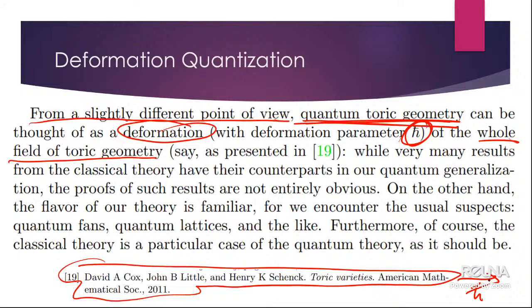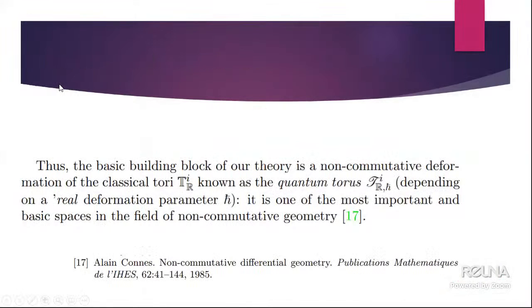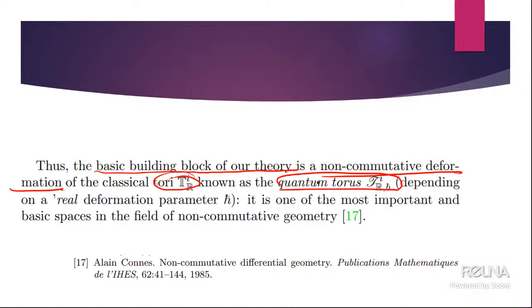Many results from the classical theory have their counterparts in our quantum generalization — the proofs are not entirely obvious; it's an interesting generalization. Unfortunately this deformation is not totally trivial, but nevertheless it can be done. The basic building block of our theory is a non-commutative deformation of the classical torus known as the quantum torus, formed by a parameter H-bar. When H-bar equals zero we recover the classical torus.